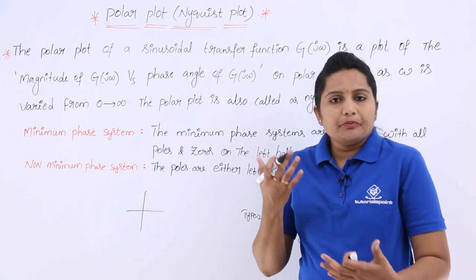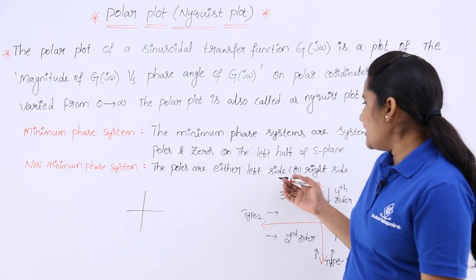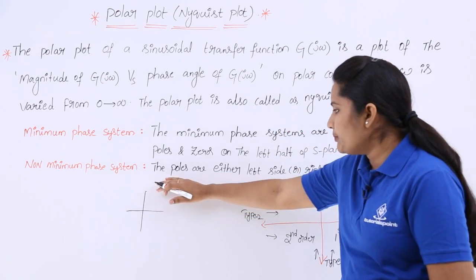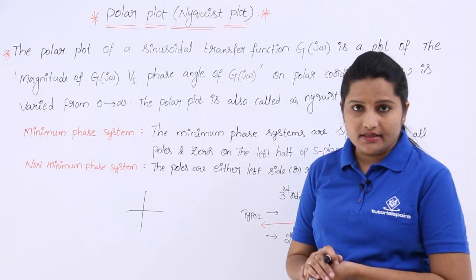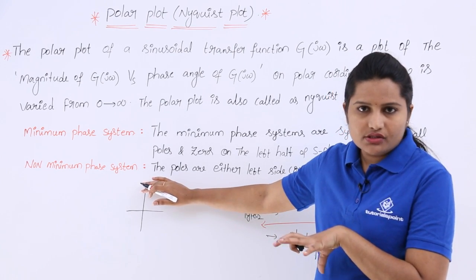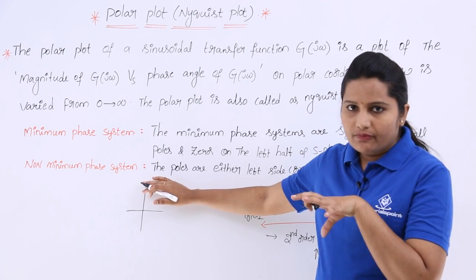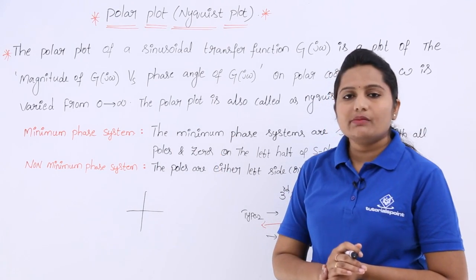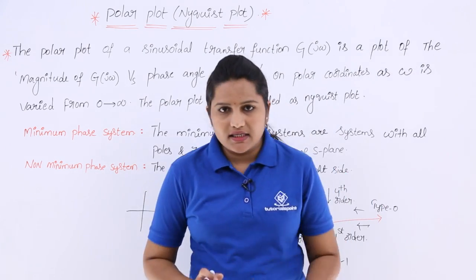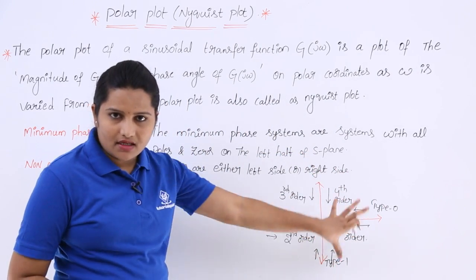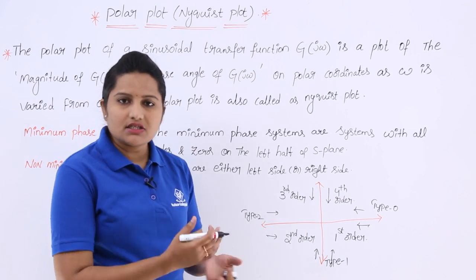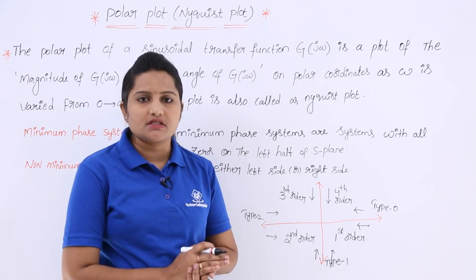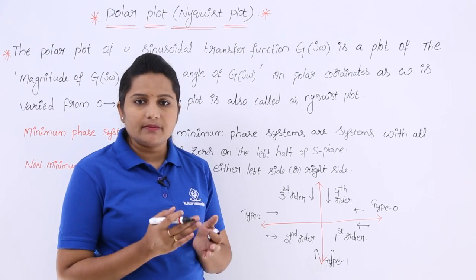For a non-minimum phase system, the poles may be either on the left side or the right side of the S-plane — there is no restriction for poles to lie only in the left half. Especially for poles: if poles can be either right side or left side, then we call that a non-minimum phase system. Now, a reference diagram is given, and from the next class onwards I will give polar plots for different types of systems — type 1, type 2, type 3.